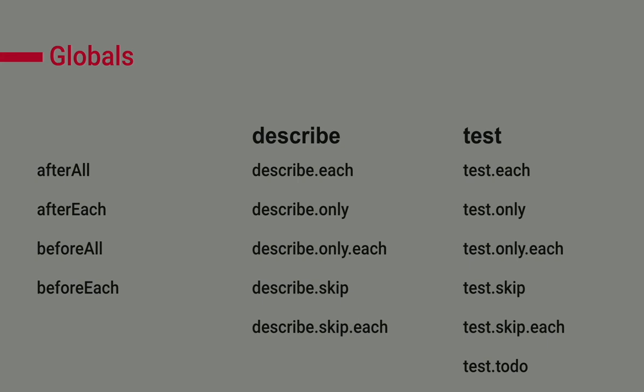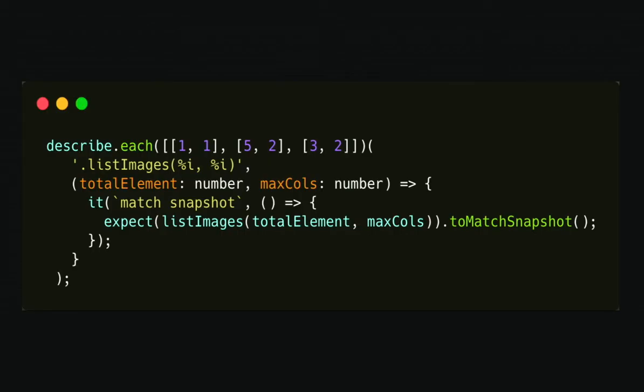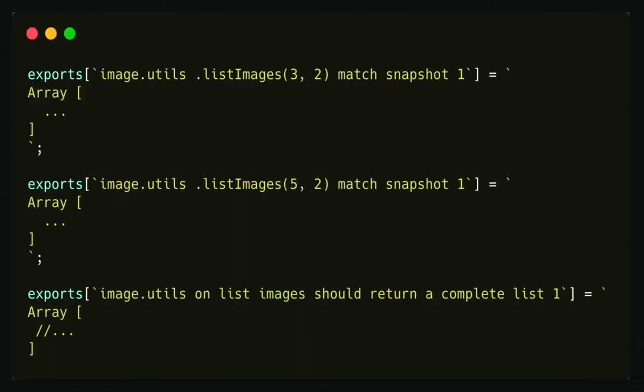So let's take an example of the describe each because this feature is like really nice. I write my test. Describe each. I have an input 1, 1, 5, 2. So I have, in fact, three test cases in this example. I want to list my images. Again, the same function of before, where I have total elements and the maximum columns. The total elements will be taken in the first element of the array. And the maximum columns will be the second element of the array. Again, if I do now expect list images to match a snapshot, I get something like this in my snapshot. So I get three tests. I get first a test with 3, 2, then list images 5, 2.